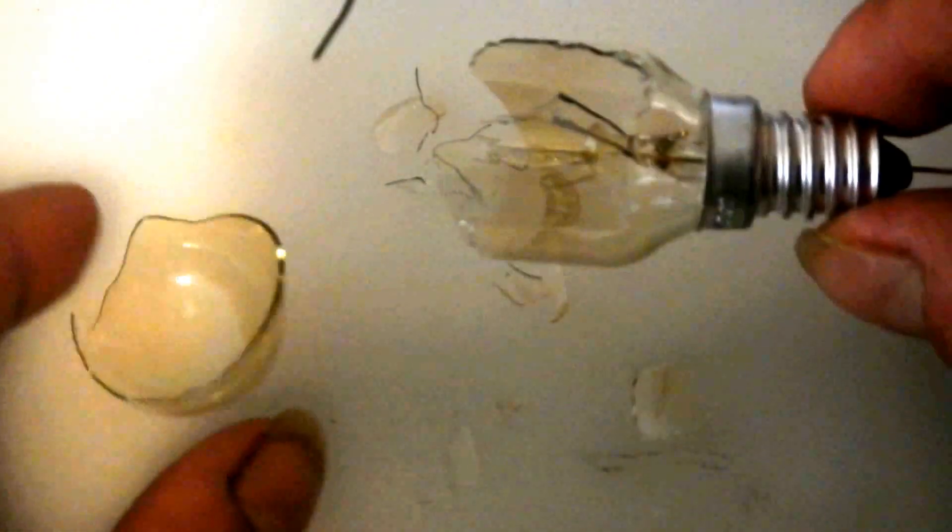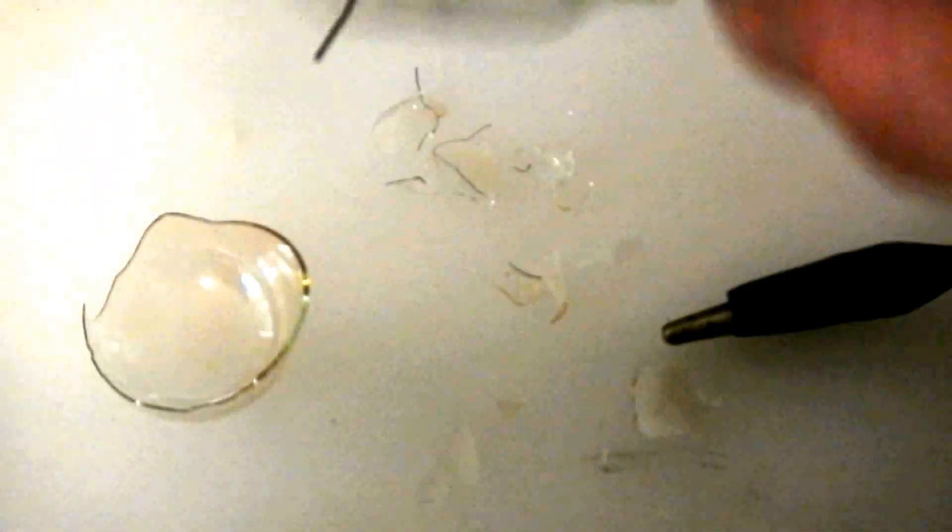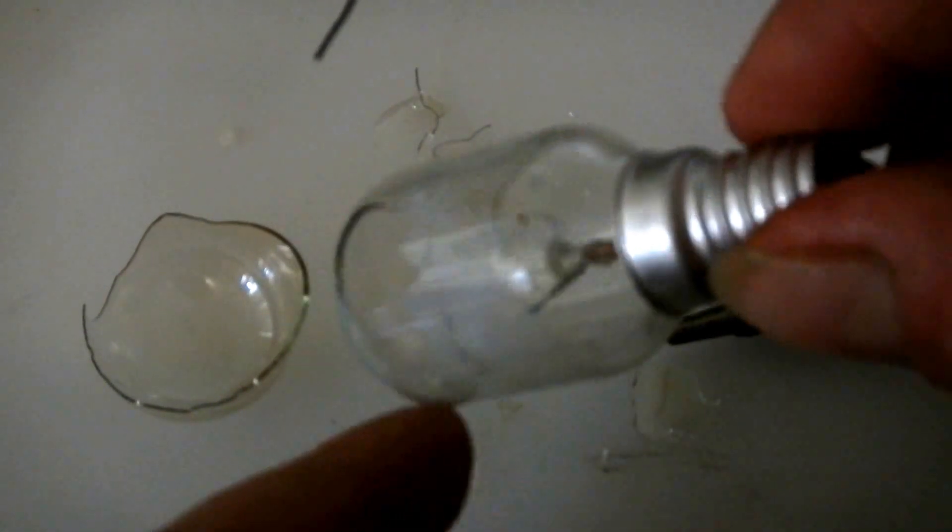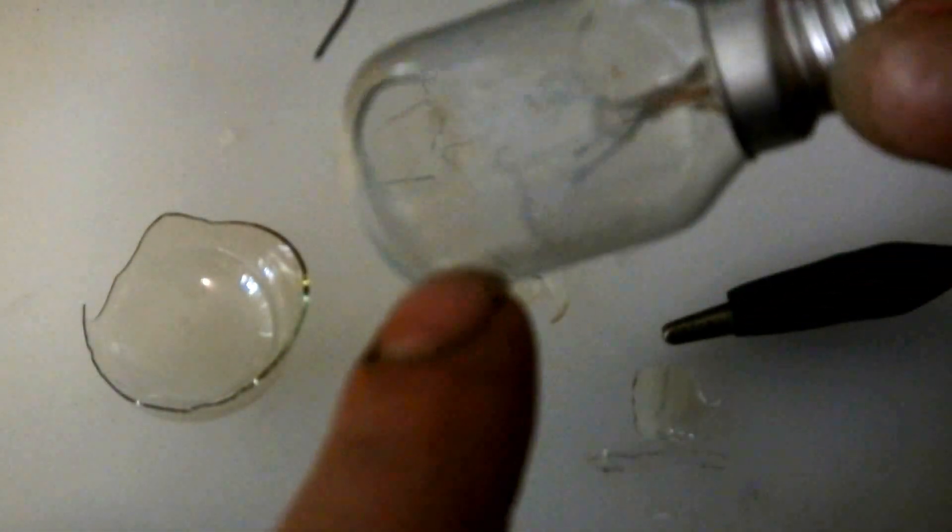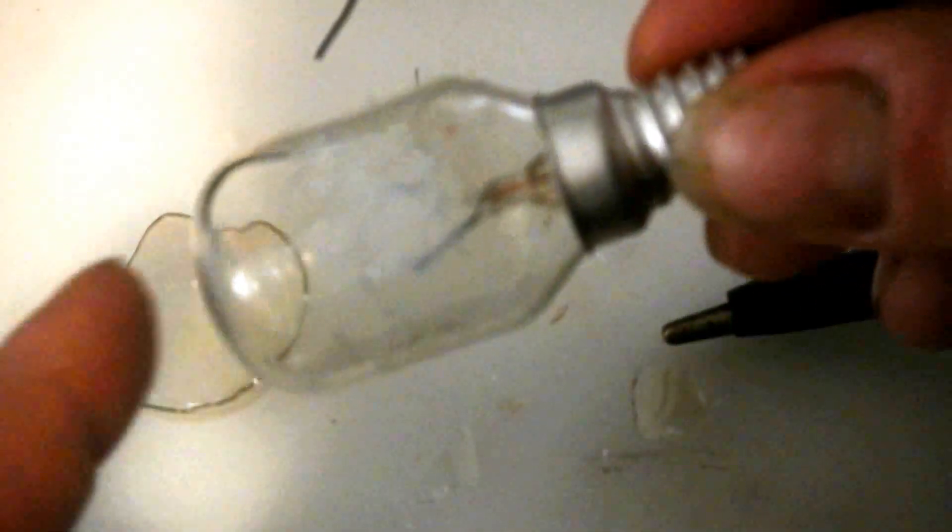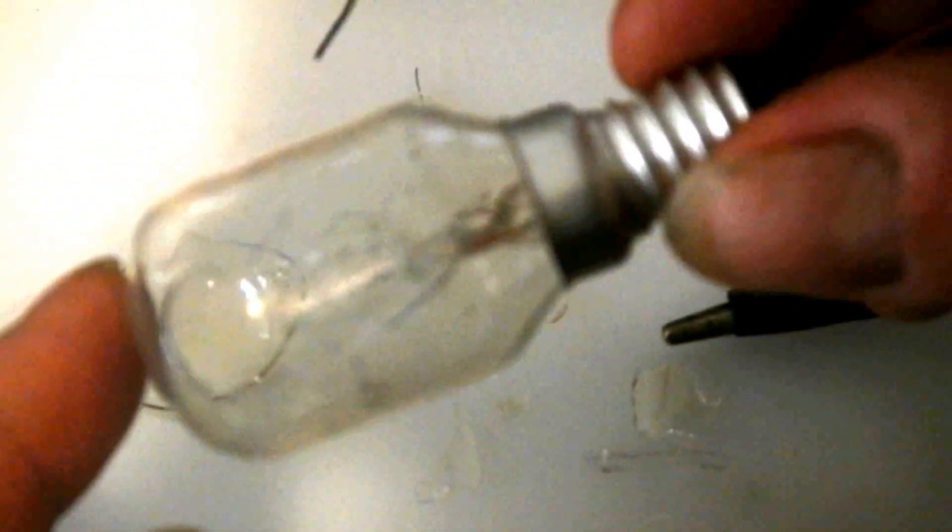I think that's the end of that light globe, don't think it'll work anymore somehow. Yeah, here's another one I did earlier and it's not showing up on the camera very well, but it does actually do some pretty clean cutting if you can control the arc.